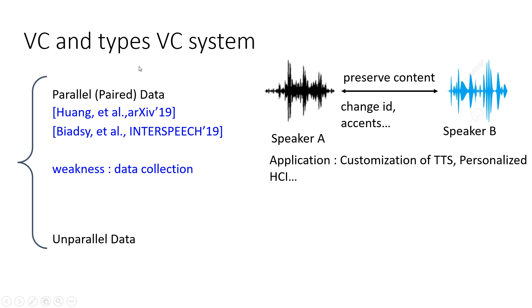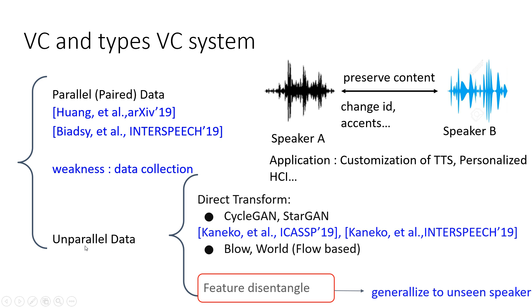In general, we divide the voice conversion system into parallel data and non-parallel data. The property of parallel data means the speakers in the dataset say the same set of sentences. This kind of dataset is very hard to collect, however it is very easy for model training. On the other hand, non-parallel data means we don't have any constraint on what speakers should say. There are generally two types of methods to tackle non-parallel data voice conversion.